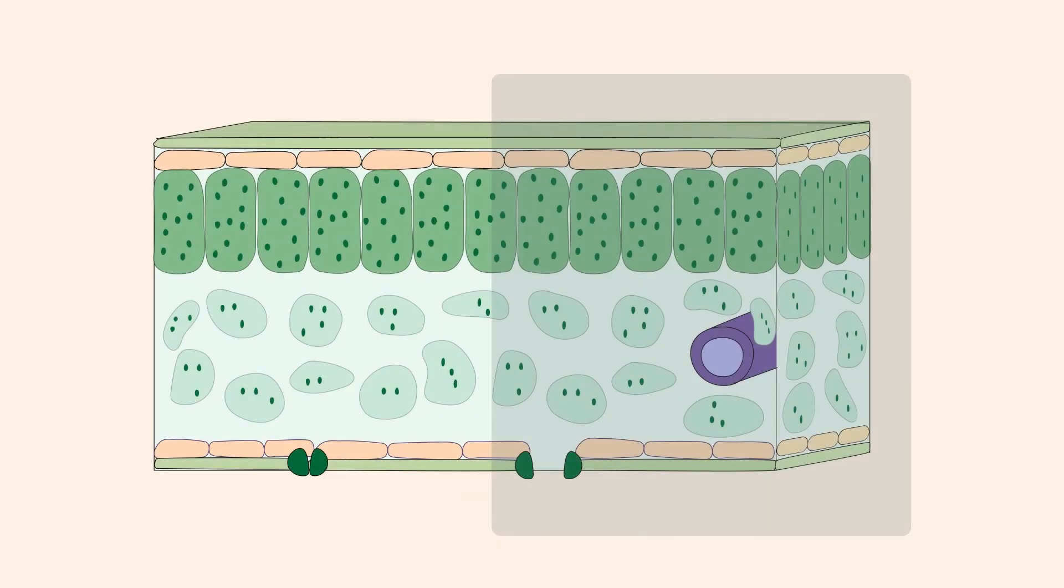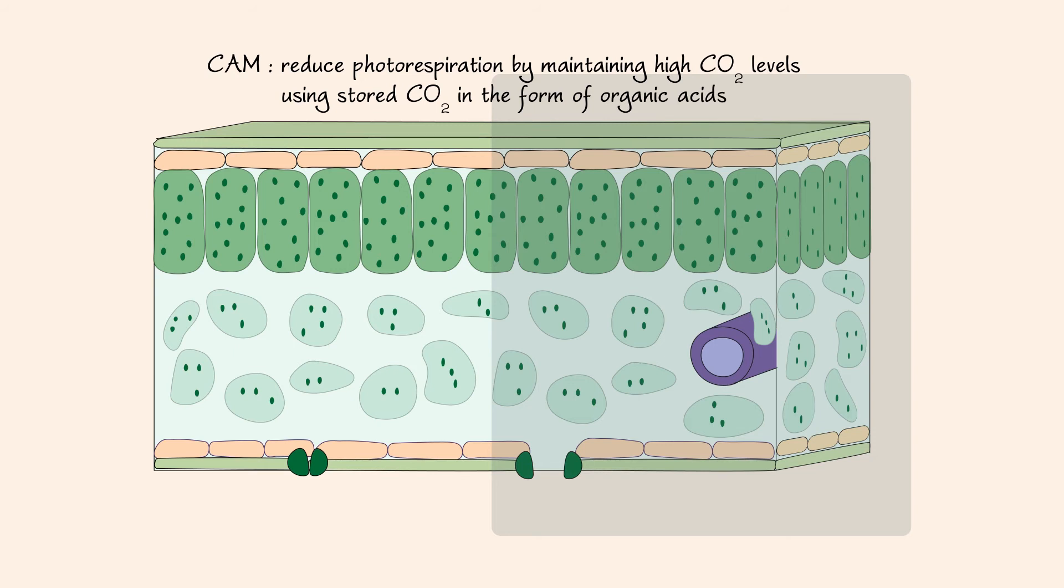The second group of plants evolved to minimize photorespiration by maintaining high carbon dioxide levels using organic acid. These plants are known as CAM plants. Notice the leaves of CAM plants have no structural alterations and are similar in structure to C3 plant leaves. CAM plants close their stomata in the presence of light and open their stomata in the absence of light.